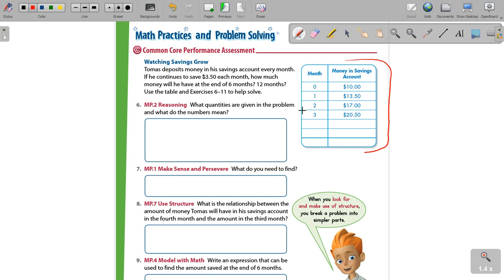So they're giving us, remember I always tell you to look for what they're giving us. They're giving us a good amount of information right here in this box. So you're going to need all of this. You've got three months right here worth of savings. So it says Tomas deposits money in his savings account every month.